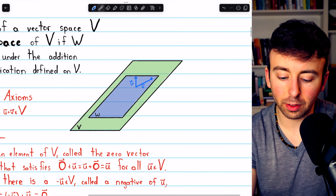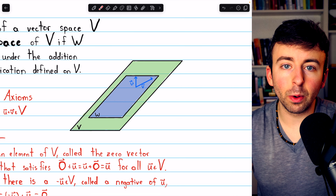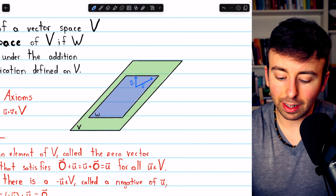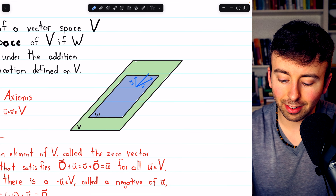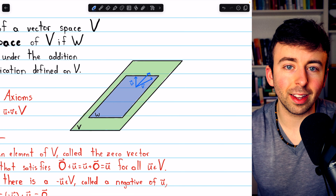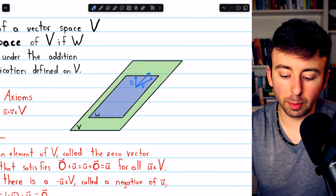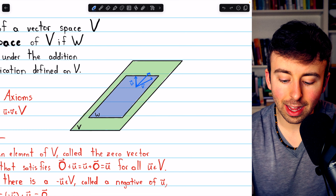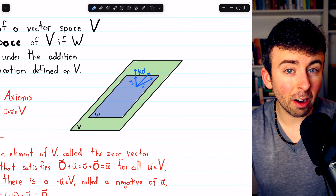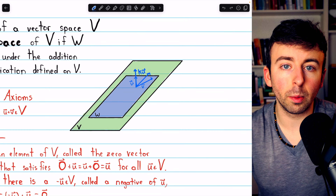Here is a pictorial representation of a vector space V and a subset W which may not be a subspace. If we have two vectors U and V in W and add them together, the result could clearly be outside W — it's in V but not in W. Just because W is a subset of V doesn't mean it's closed under vector addition. Similarly, we could scale vector U by scalar K such that K times U leaves W, so W doesn't necessarily have to be closed under scalar multiplication either.